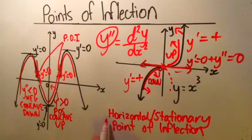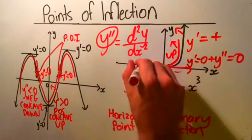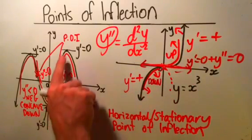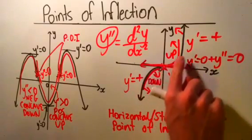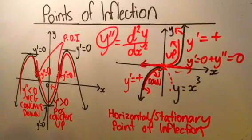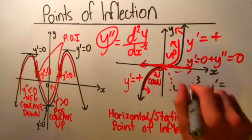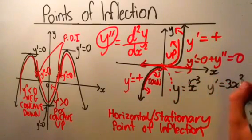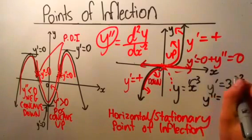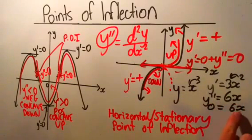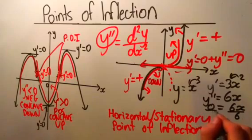Remember this term: you can call it a horizontal point of inflection, because the gradient is horizontal, or a stationary point of inflection, because the derivative is not moving there. It's like a turning point, but the curve doesn't turn because it goes back up. You can find it by taking an equation like y equals x cubed, finding the first derivative which is 3x squared, then finding the second derivative which is 6x, and making it equal zero. Dividing both sides by six, you get x equals zero, which is where that point is.